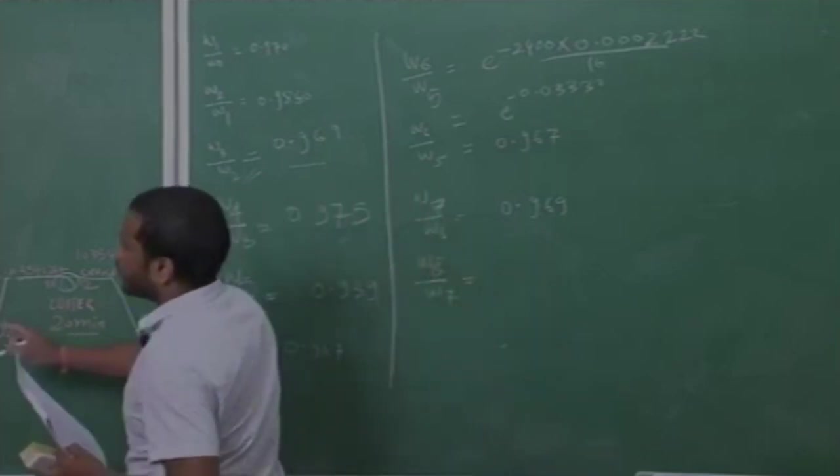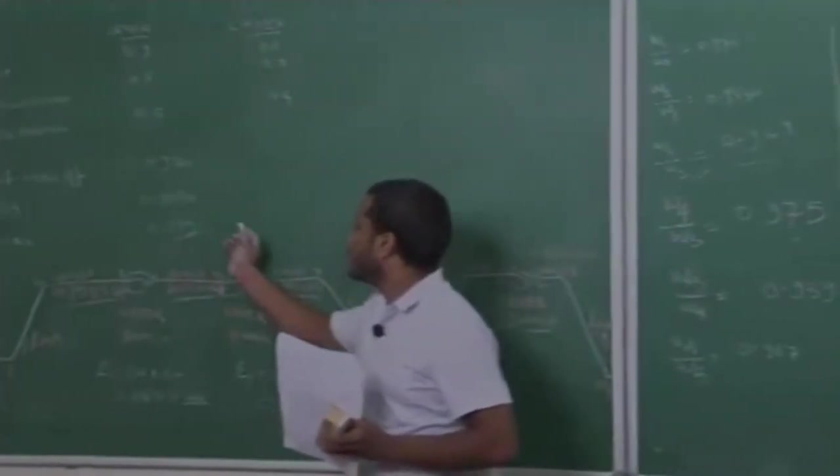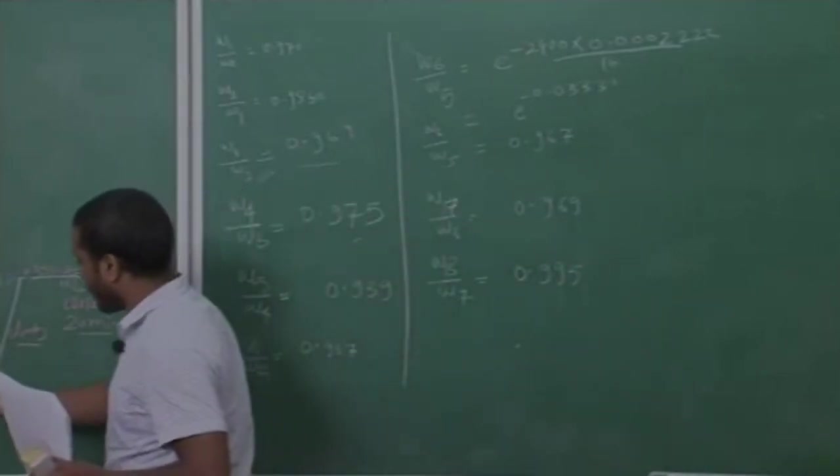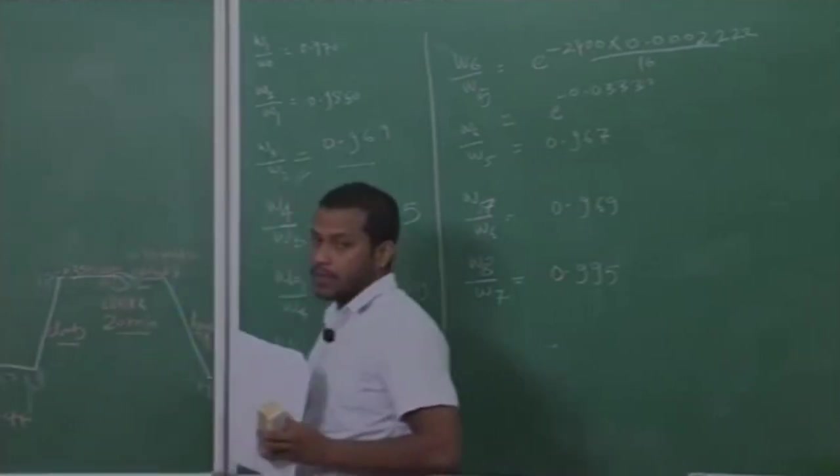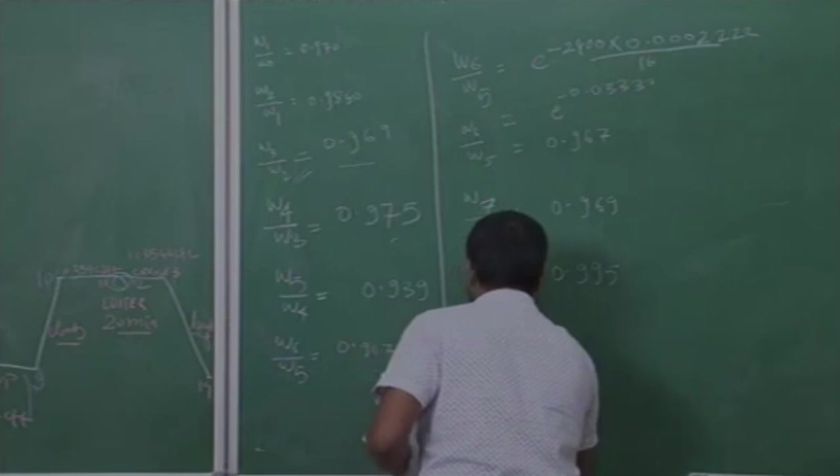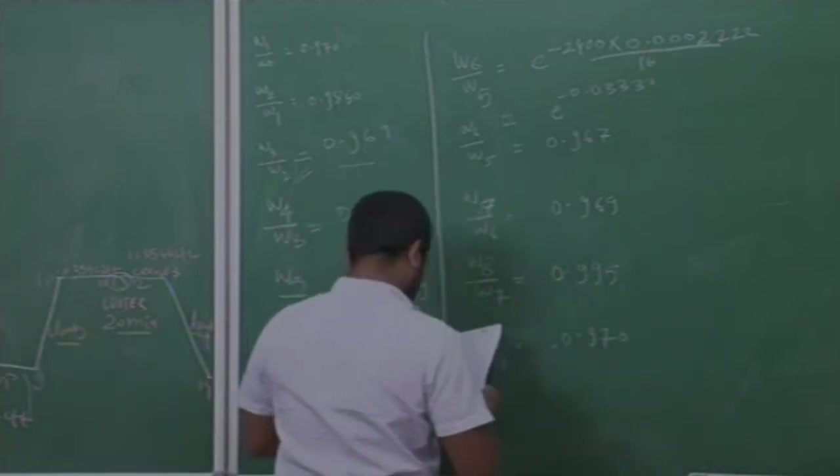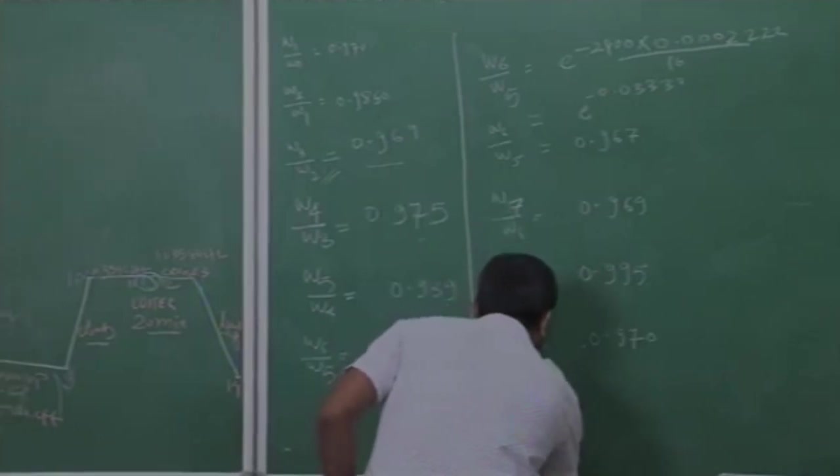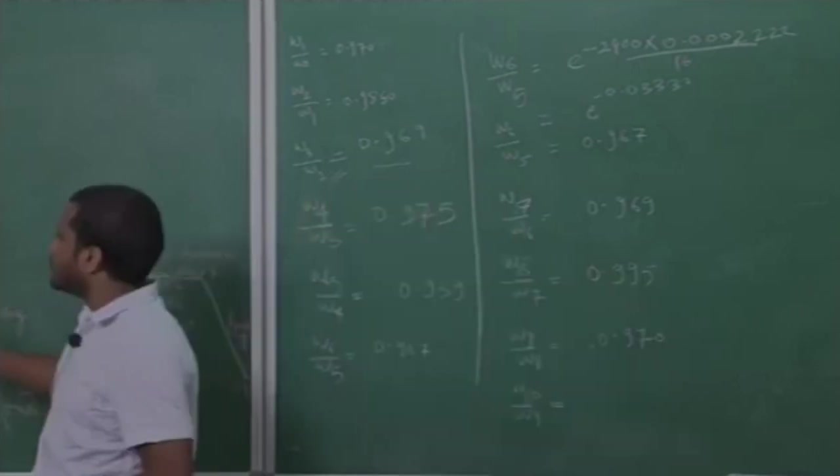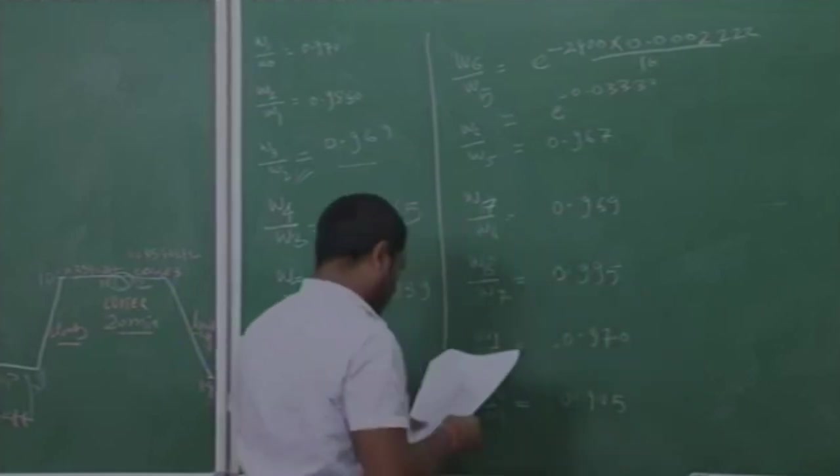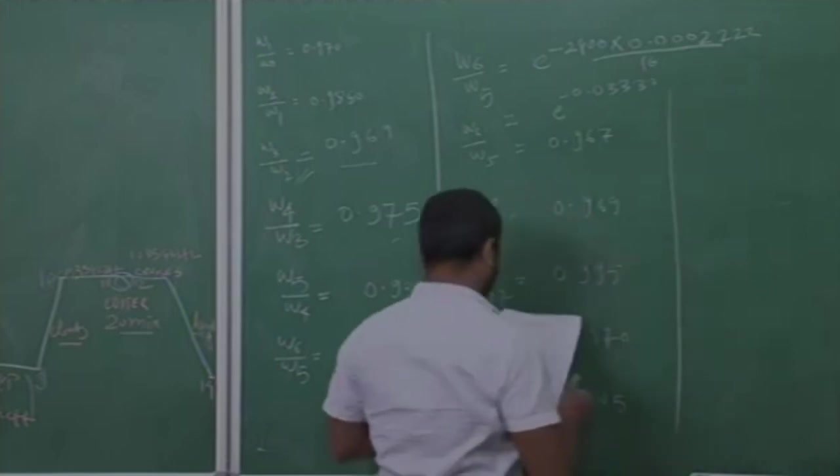For landing we will use the historical data, that is 0.995. Again here I am taking this condition warm up and takeoff, so using the historical data W9 by W8 for warm up and takeoff 0.970. And for again 9 to 10 that is climb, so for climb is 0.985.